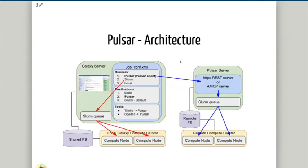The architecture looks like this diagram here. The Galaxy server is talking to a SLURM queue to send jobs out to compute nodes, and there's a shared file system between the compute nodes and the Galaxy server — the local Galaxy cluster. Inside Galaxy's job.conf we've defined job runners: the SLURM job runner, the local job runner, and the Pulsar job runner, which is actually the Pulsar client. In the destinations we've set up a local destination, a Pulsar destination, and a SLURM destination. By default we send everything to SLURM, except that if a user wants to run Trinity or SPADES, those tools are sent to the Pulsar destination.